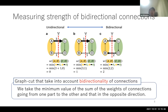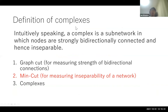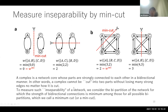Using this measure of strength of bidirectional connections, we consider the minimum cut for measuring inseparability of a network. A complex is a subnetwork whose parts are strongly connected to each other in a bidirectional manner, and a complex cannot be cut into two parts without losing many strong edges, no matter how it is cut. So a complex is, in other words, an inseparable subnetwork.